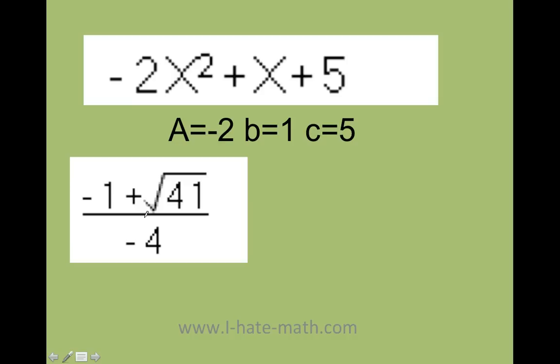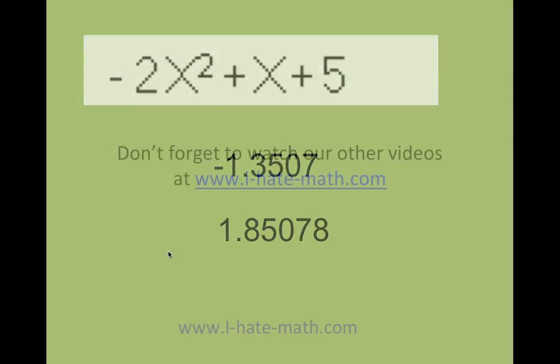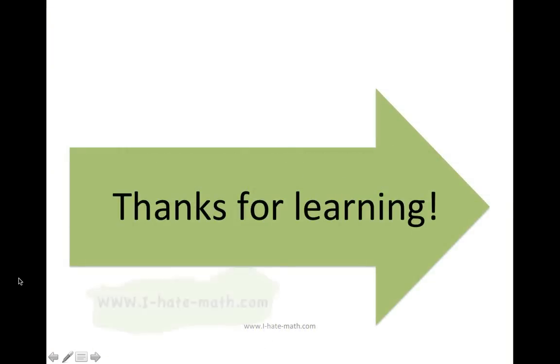Or you can just plug it into the calculator and get these values. You just do negative 1 plus the square root of 41, then put enter. Then divide it by negative 4. And then the same thing, but you're going to do negative 1 minus the square root of 41 divided by negative 4. And you should get these answers. Thank you so much for doing an amazing job. Please don't forget to watch our other videos. And also, thanks so much for learning.